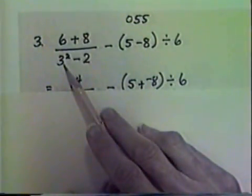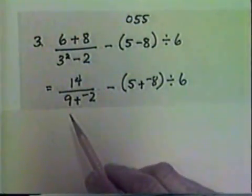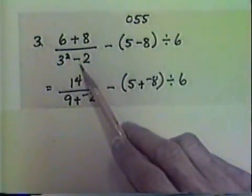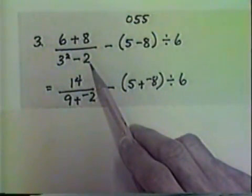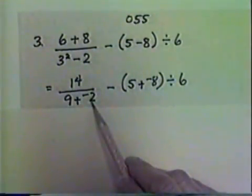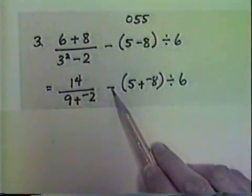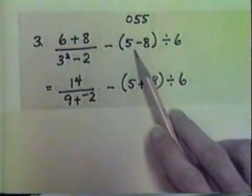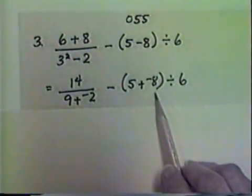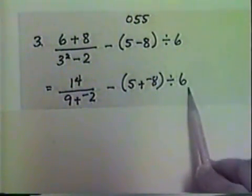Below the fraction bar, we have 3 squared, which is 9. 9 subtract 2, rewrite as add negative 2. Then the subtraction symbol. And within the parentheses, 5 subtract 8, we can rewrite as 5 plus negative 8. Copy that divided by 6.